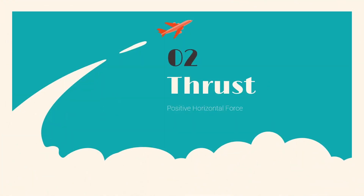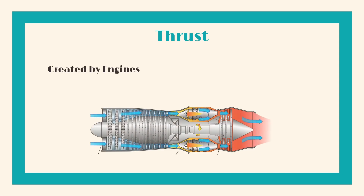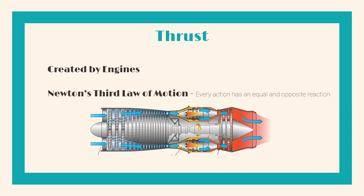Thrust is the positive horizontal force that pushes the aircraft forwards. This is most often created by some kind of engine, be it a propeller engine or a turbofan engine. All of these engines create thrust by pushing air backwards, and because Newton's third law of motion states that every action has an equal and opposite reaction, the air will have a reaction by pushing the aircraft forwards, creating thrust. And whenever the aircraft is going at a fast enough speed, the airfoil's shape is able to optimize for the required air pressure difference for it to create enough lift.